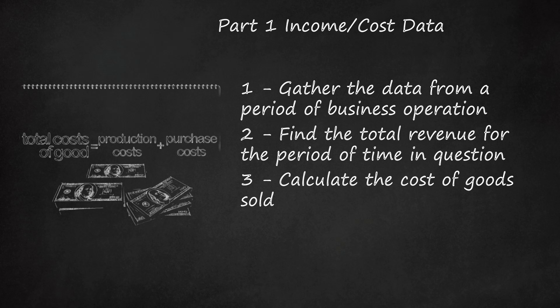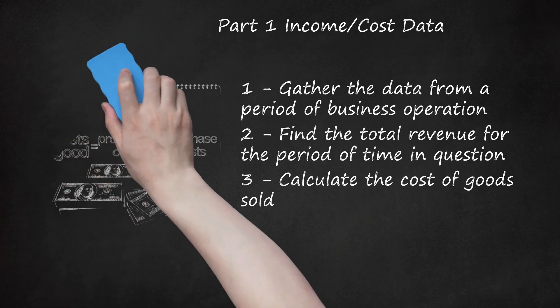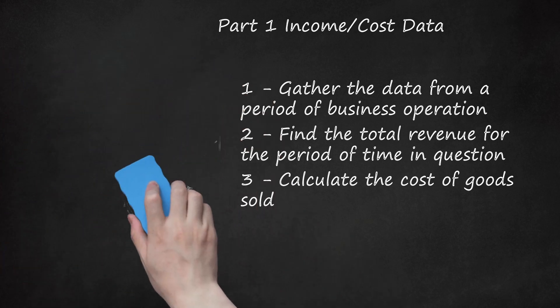If you want to figure out the profitability of several products, you can separate the total revenue and the total cost of goods sold for each product and find individual gross profit margins.